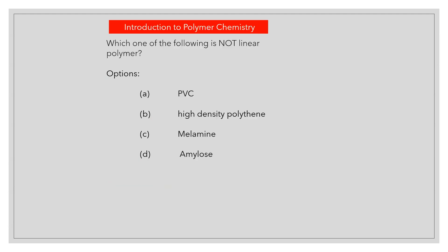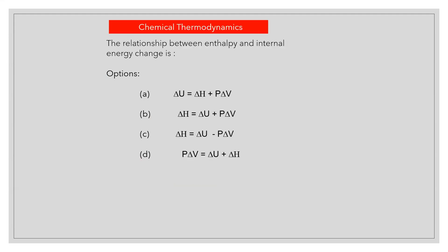Which one of the following is not a linear polymer? Answer C: Melamine.